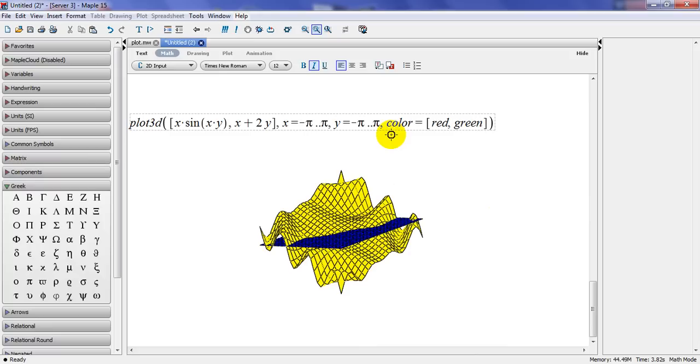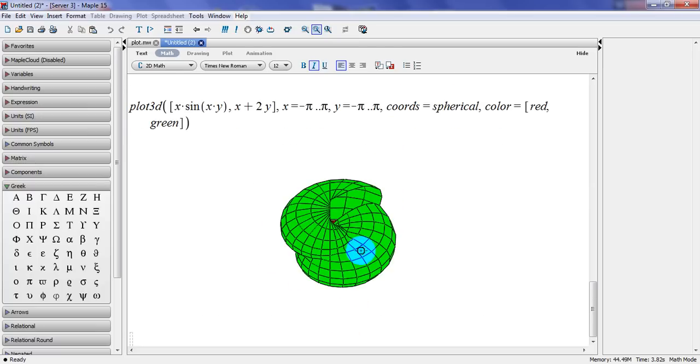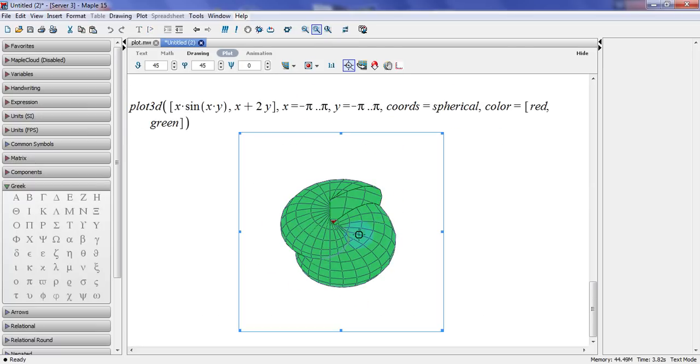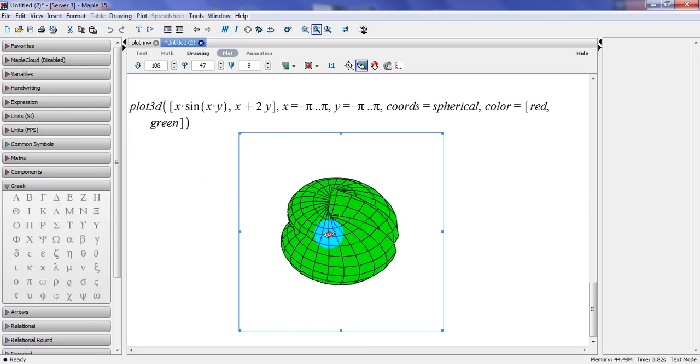I could also add different coordinates. So I could use, for example, coordinates as I did here. Spherical. And of course, it would have been a different shape. So let's just change it here. So the other one is within here.